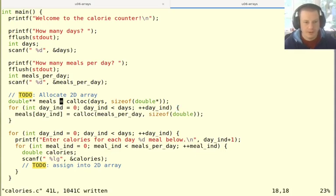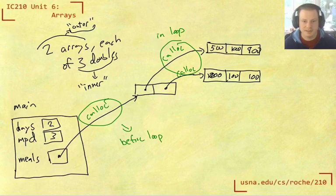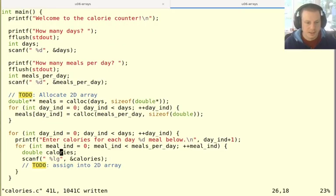So what we've done now in this outer allocation and this loop of inner allocations is exactly make this picture with all the boxes. And now it's just a matter of filling those in. So let's see how that works.